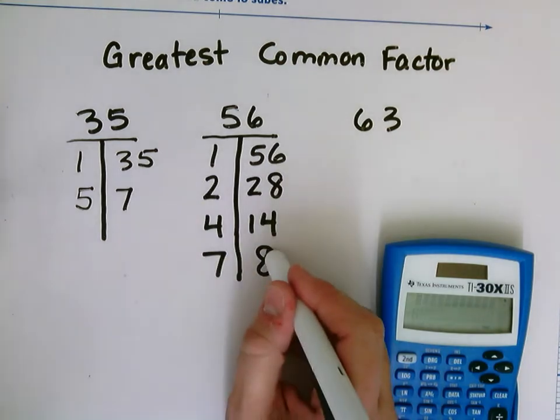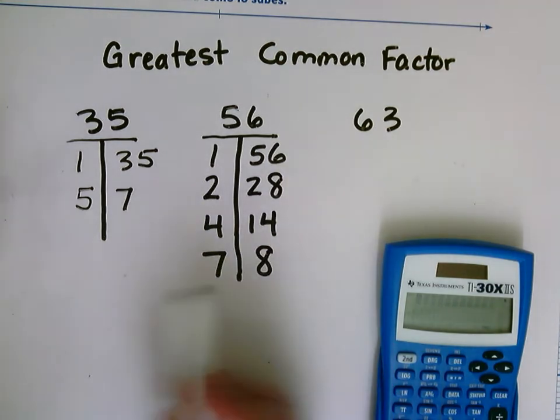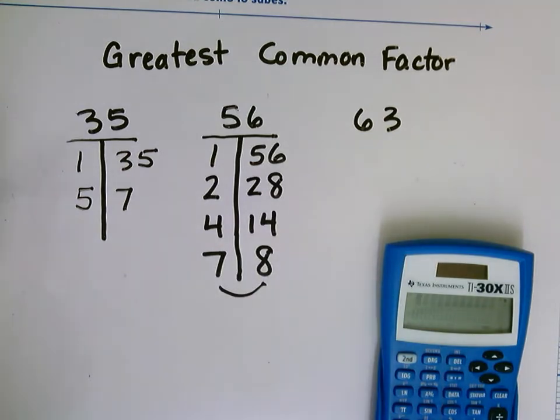So I know 7 and 8 are both factors of 56. And then if I go to my next number, it would be 8, and here I already have 8 in my numbers. So these are all the factors of 56.